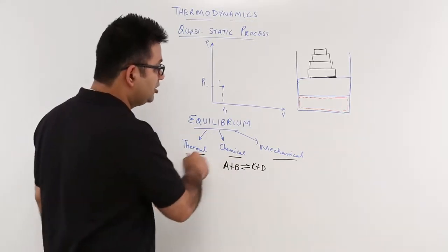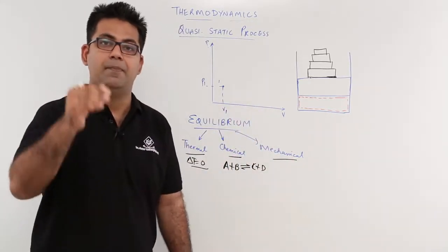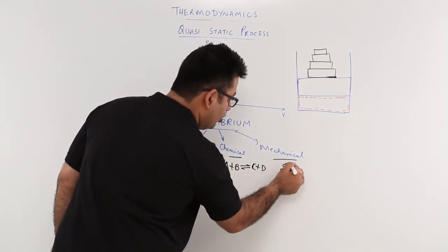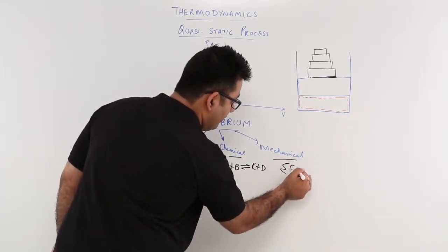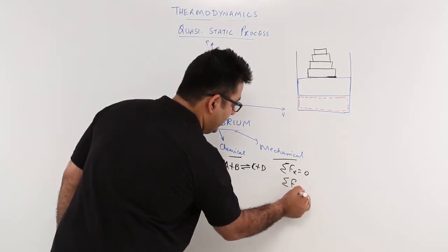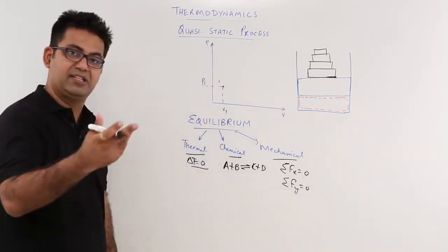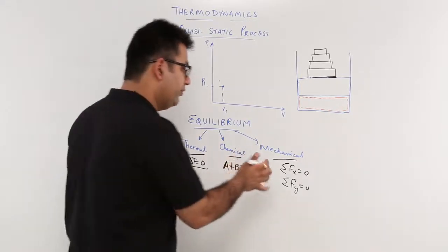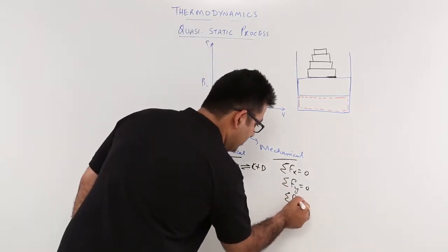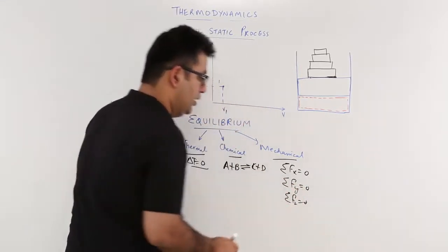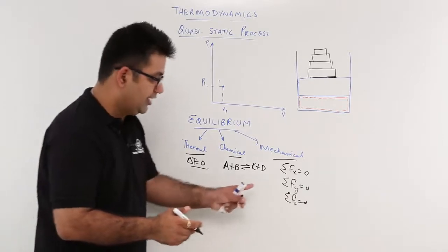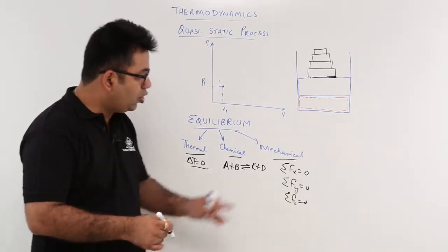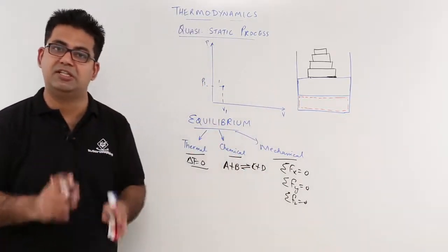Now we come to the third kind of equilibrium: mechanical equilibrium. In mechanical equilibrium, there are no unbalanced forces in any direction. So sigma Fx is zero, sigma Fy is zero, and even in a three-dimensional study of forces, sigma Fz is zero. There are no unbalanced forces in the system.